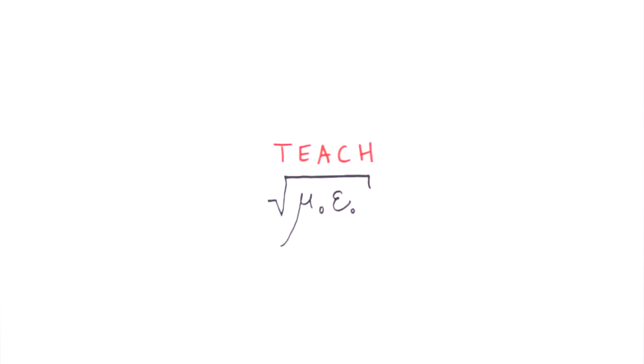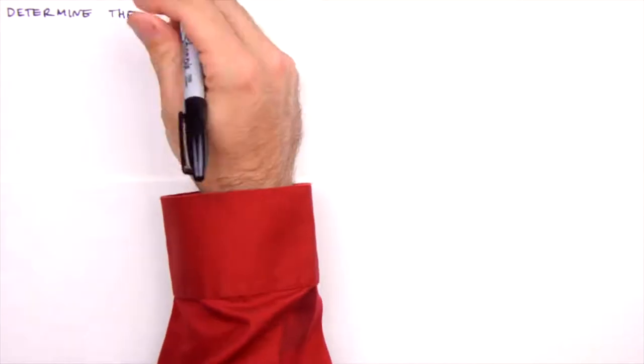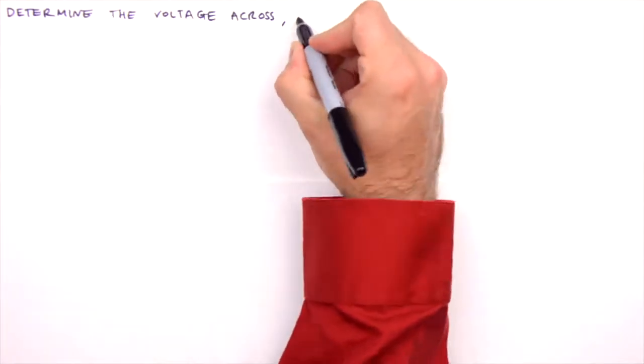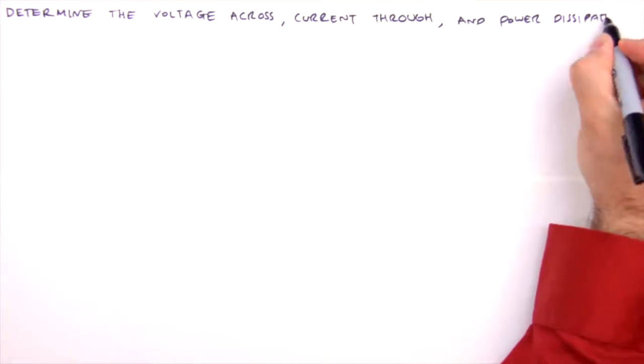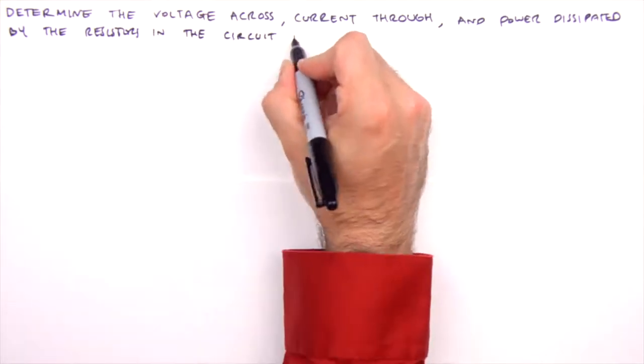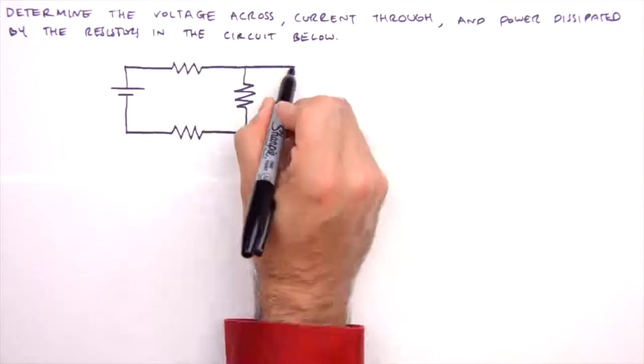The combination circuit is sort of like the boss at the end of the first level of circuit analysis. Together, we'll tackle this bad boy using the principle of equivalent resistance and Ohm's law. We'll determine the voltage across, current through, and power dissipated by each of the resistors depicted in this circuit diagram.